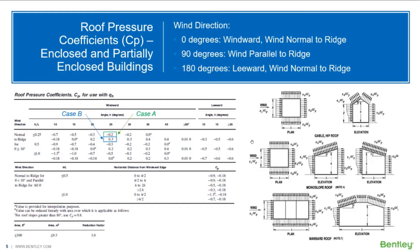When you're specifying your parameters for your roof system, there are a few additional pieces of information you will have to provide the program so it can correctly determine what the roof pressure coefficient will be. This will include the wind direction, whether you are normal or parallel to the ridge of your structure, and whether or not you're working on case A or case B. As for the angle and the distance from the windward edge, the program will be able to determine this information considering the areas that this wind definition is assigned to.